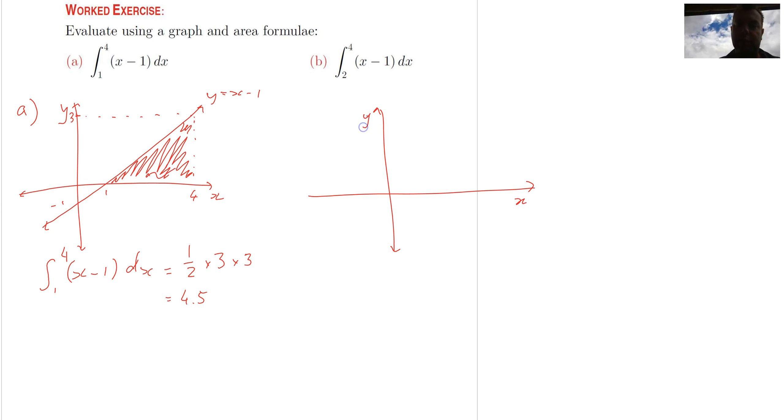So there's our axes x and y. Linear function x minus 1, so that looks like this, cross there at negative 1, it's going to cross there at 1. Now we want the bounds from 2, that's going to be here, 2 to 4, this region here.